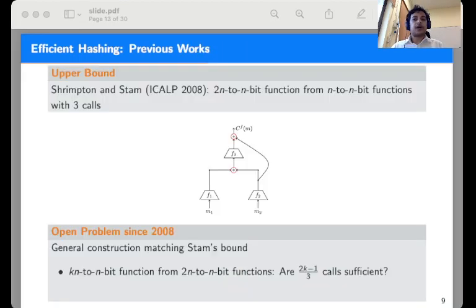The only upper bound achieving n/2 bits of collision security is the Shrimpton-Stam construction from 2008. The construction is described in the picture. The construction uses 3 n to n-bit functions and compresses 2n-bit message to construct n-bit digest. However, the problem is open for general parameters.